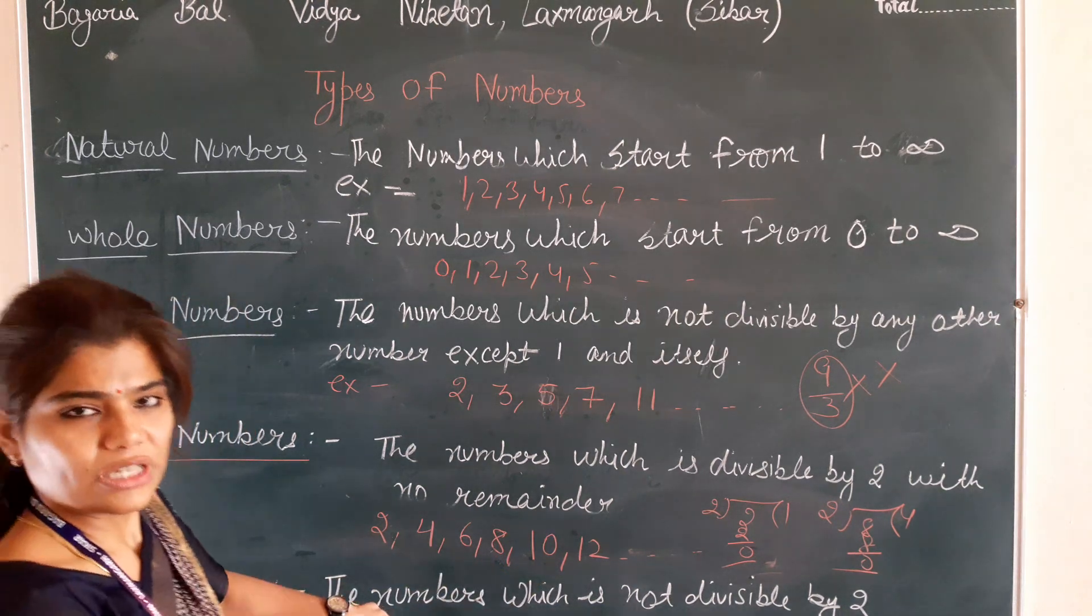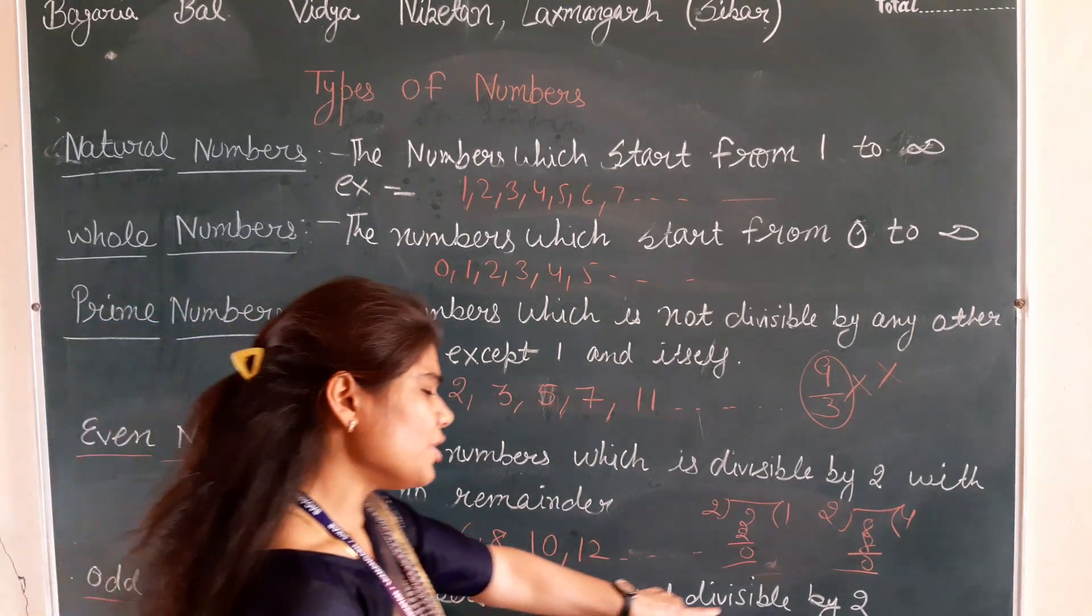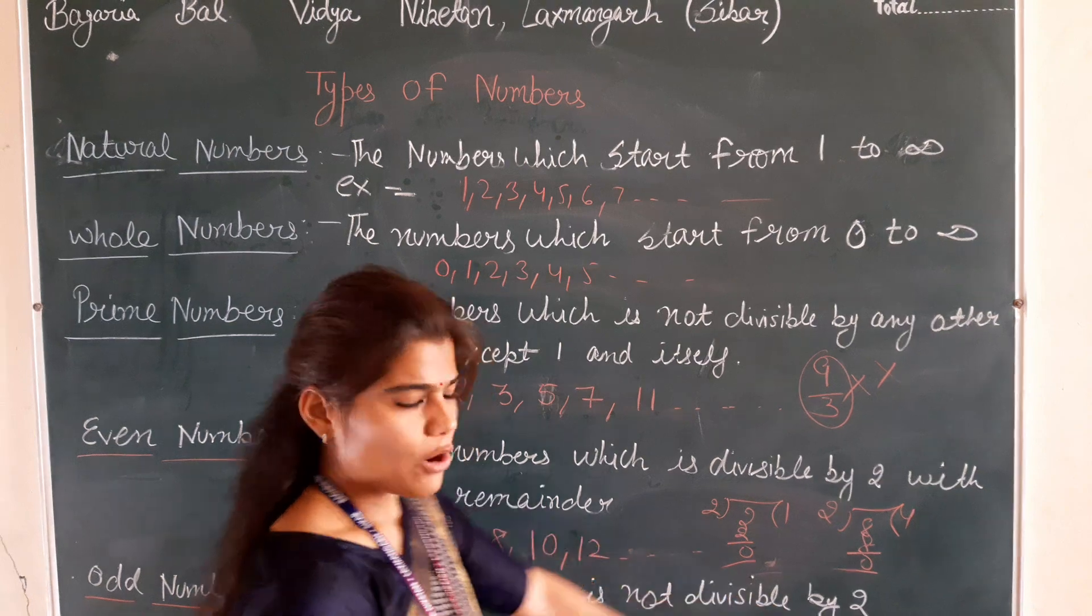Now odd numbers. The numbers which are not divisible by 2 are called odd numbers.